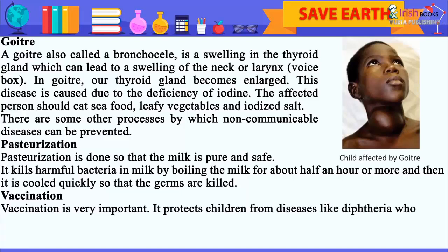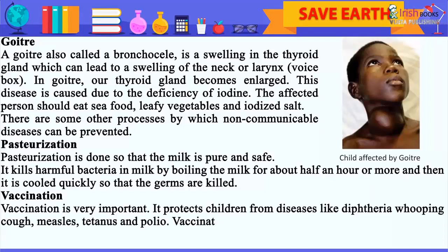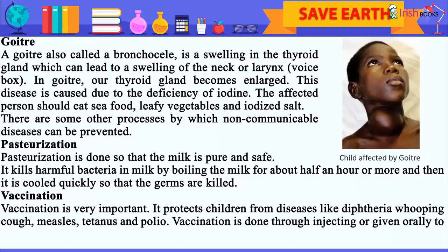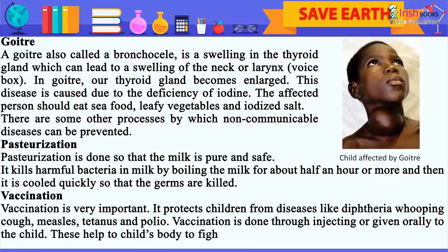Vaccination is very important. It protects children from diseases like diphtheria, whooping cough, measles, tetanus and polio. Vaccination is done through injecting or given orally to the child. These help the child's body to build immunity and prevent diseases.